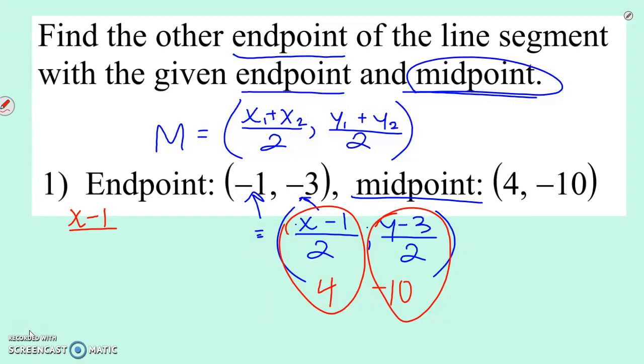So x minus 1 divided by 2 is equal to 4. I multiply both sides by 2 using inverse operations. x minus 1 is equal to 8. Then I'm going to add 1 to both sides and I get 9 equals x or x equals 9. Let's just plug it in and make sure this makes sense. 9 minus 1, 8 divided by 2 would give me 4. Good.